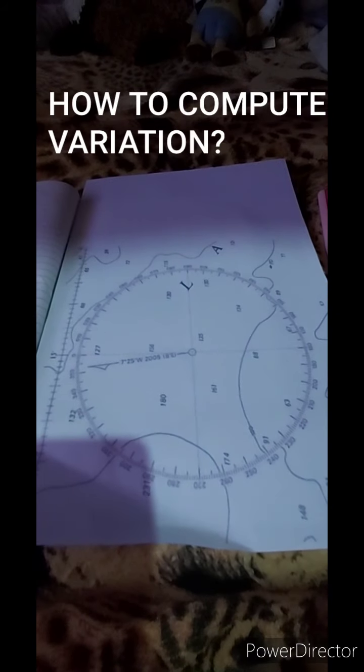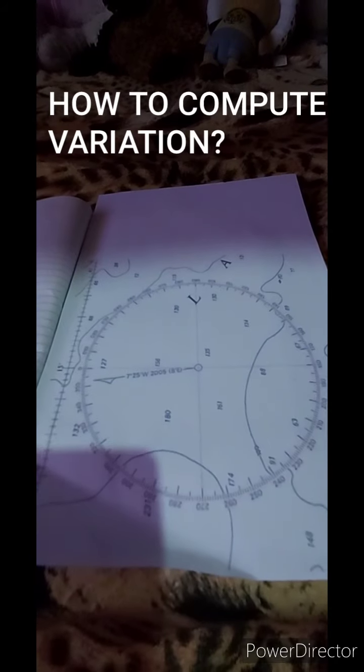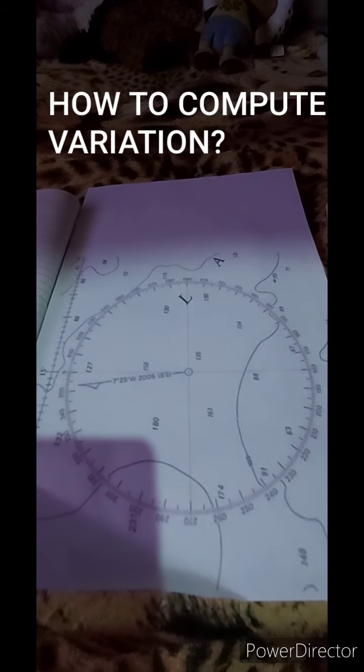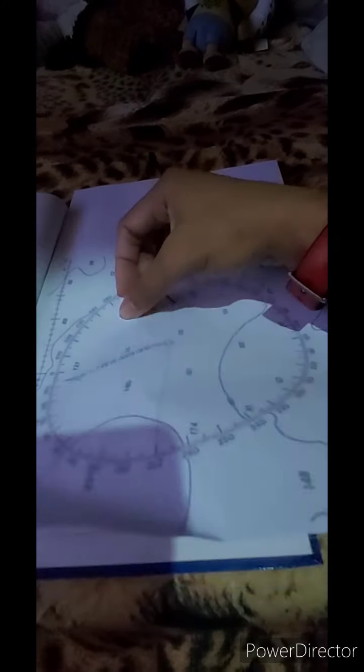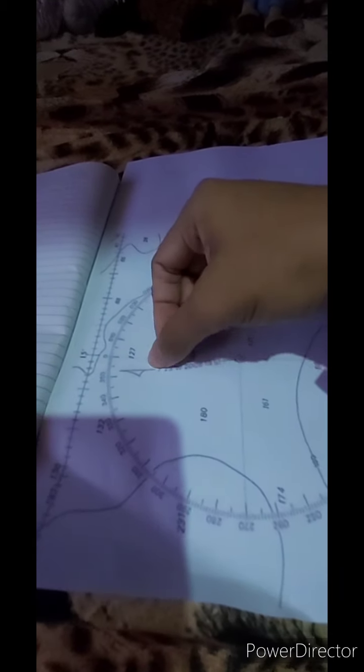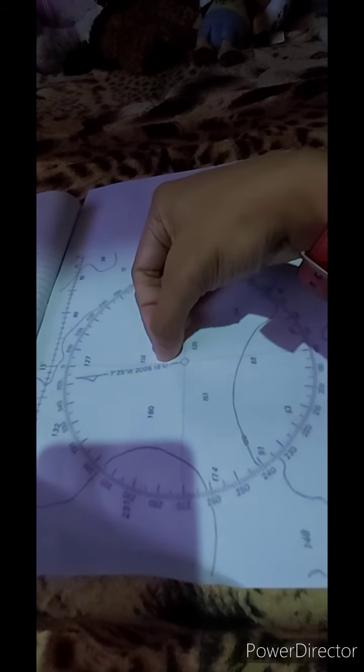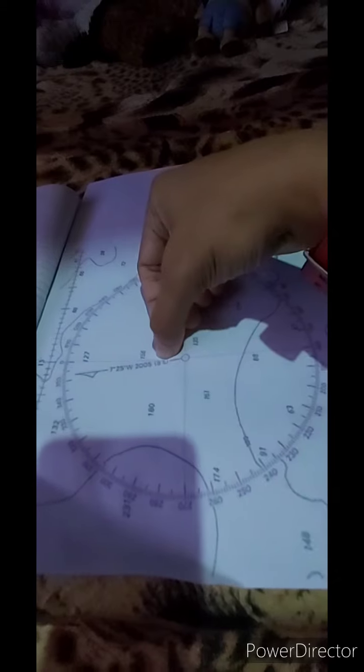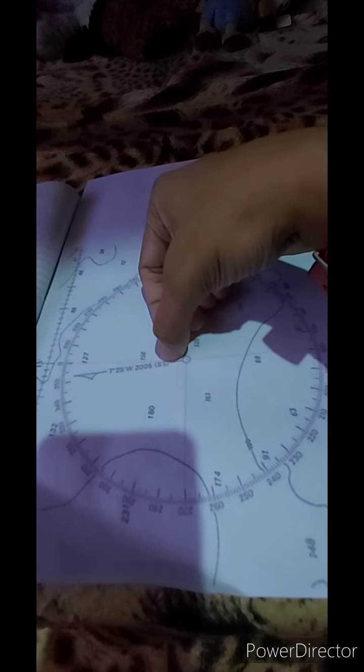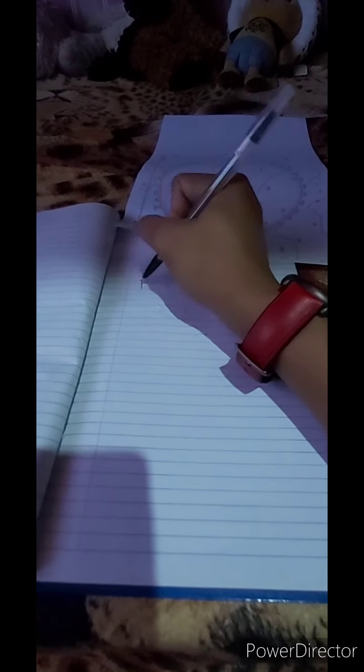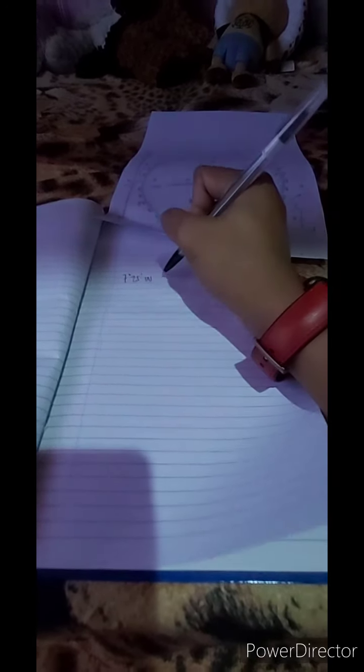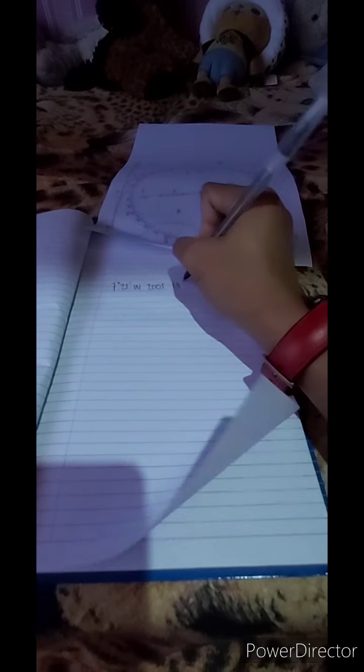How to compute for variation. I just printed a copy of compass rows from the internet because I don't have a nautical chart here. The example here is 7 degrees 25 minutes west, 2005, 8 minutes east. This 7 degrees 25 minutes west is the computed variation of 2005, and the 8 in the enclosed parenthesis is the annual change of variation per year. I'll write the given here in the notebook for clearer view: 7 degrees 25 minutes west, 2005, 8 minutes east.